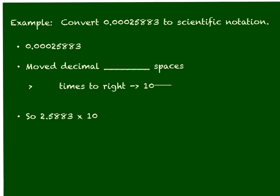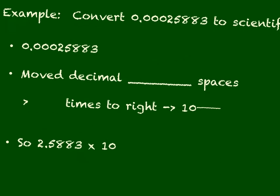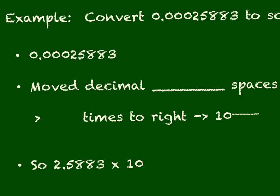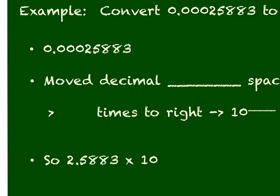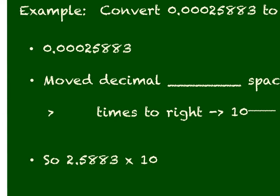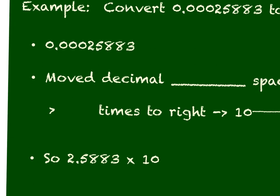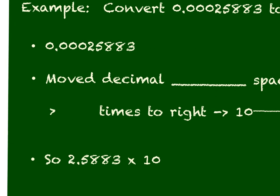Converting numbers that are less than 1, we just have to remember we're moving the opposite direction and we're making our number appear a little bit bigger than it normally is. So in this case I'm looking at this small decimal value. It is definitely less than 1. Here's my current decimal place right there and I need to move it so I have one number in front of the decimal.